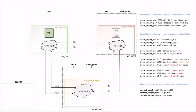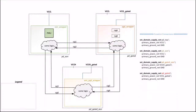Finally, we connect the nets created to the ports created. Then we define which supply net is the primary power supply net and primary ground supply net for all the domains. In the gated domains, you can see how we have used the gated supply net as the primary supply net.